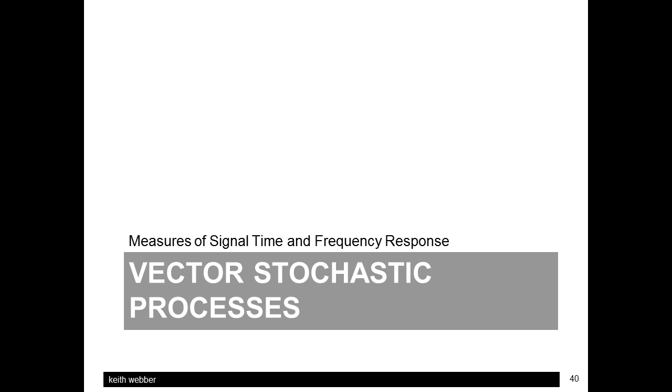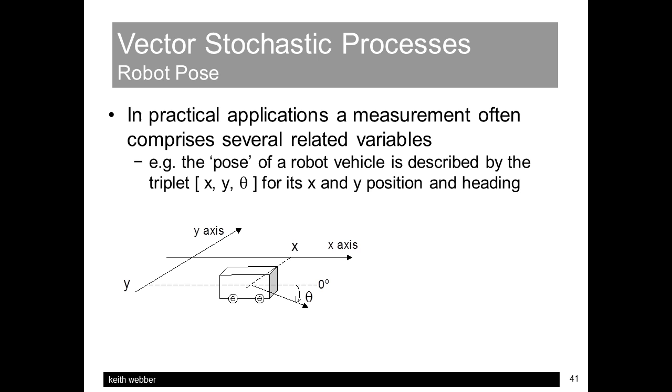Signals for modeling and filtering applications often come in bundles conveniently described by vectors, leading on to consideration of vector stochastic processes. For example, we might want a robot vehicle to navigate itself around an area, and hence we're interested in its position. This is modeled as the robot pose, comprising the triplet of variables x, y, and theta, where x and y fix the robot position on the map, and theta is its heading. It's convenient to represent the pose as a vector x in bold type to indicate its shorthand for a vector of variables x1, x2, and x3 for our x, y, and theta.